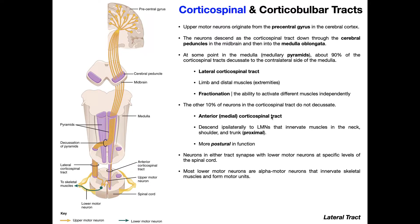We're going to see that these are two-neuron systems where they're comprised of upper motor neurons that originate in the brain, and then coming out of the spinal cord we have lower motor neurons that are going to ultimately go to skeletal muscle and trigger their contraction. So let's get into the details here.